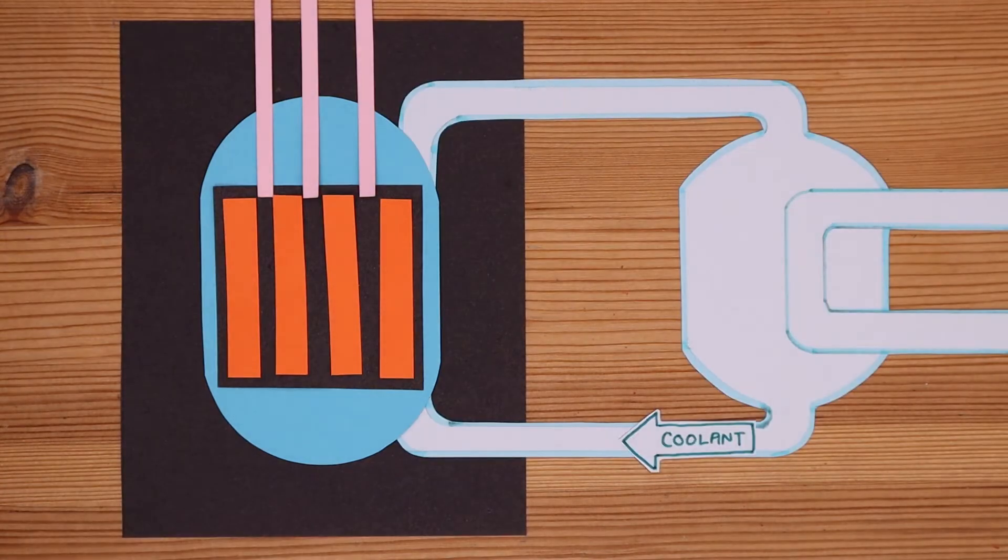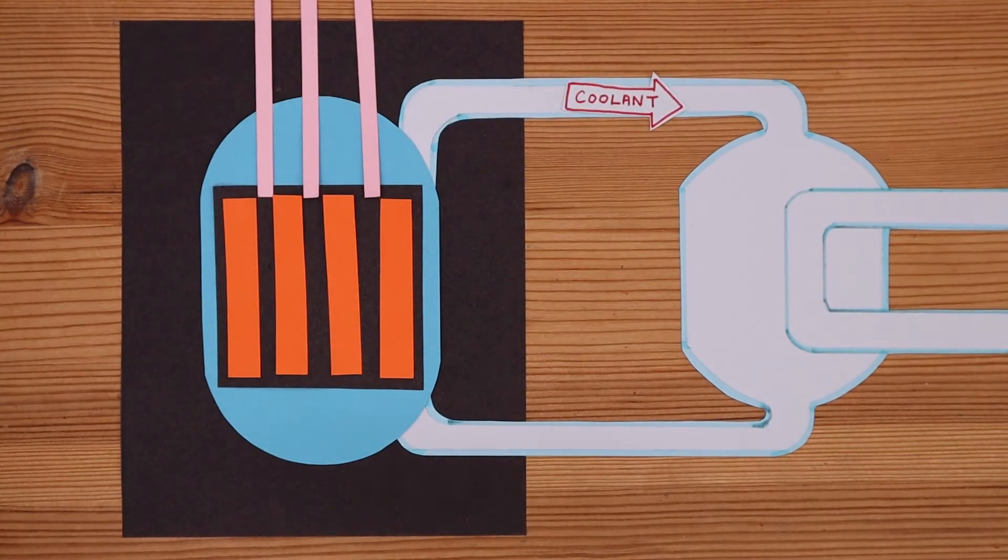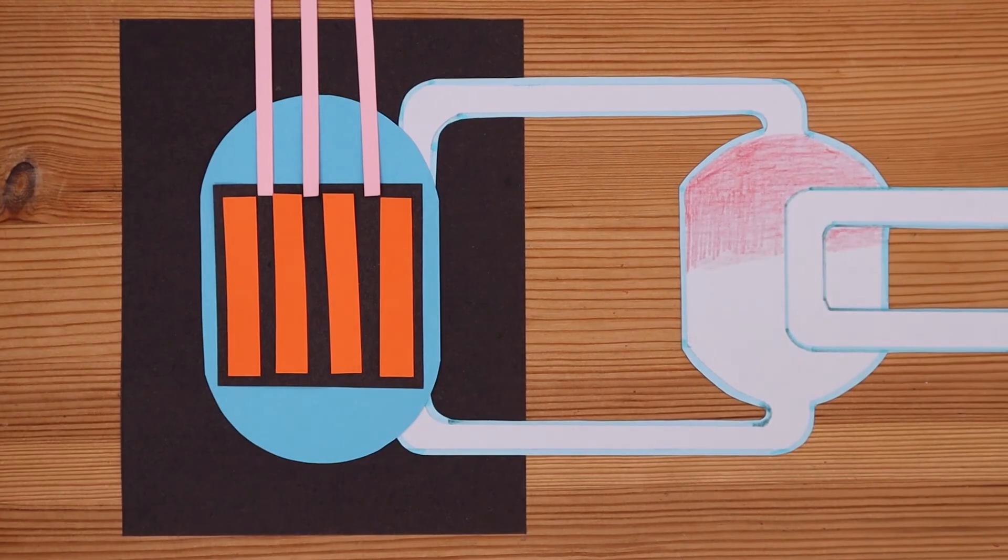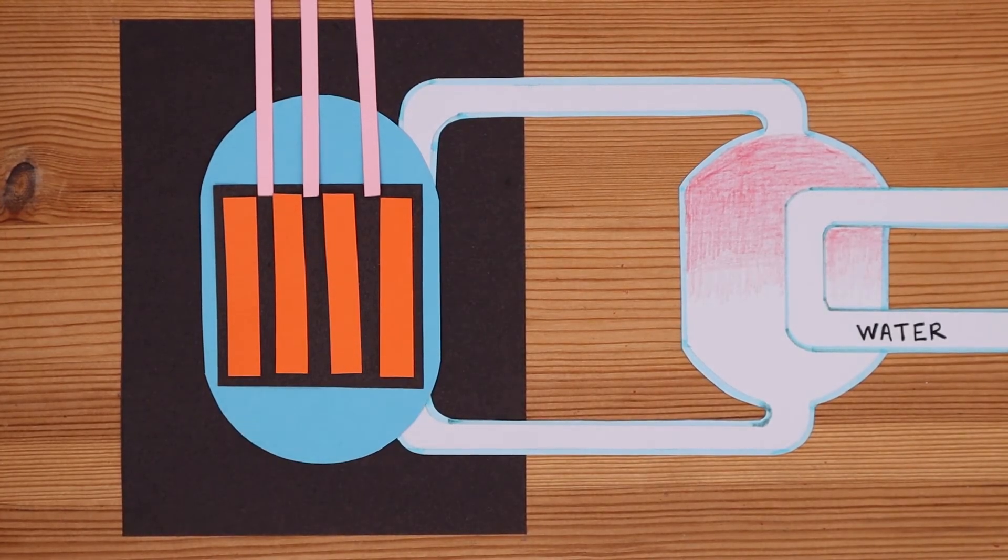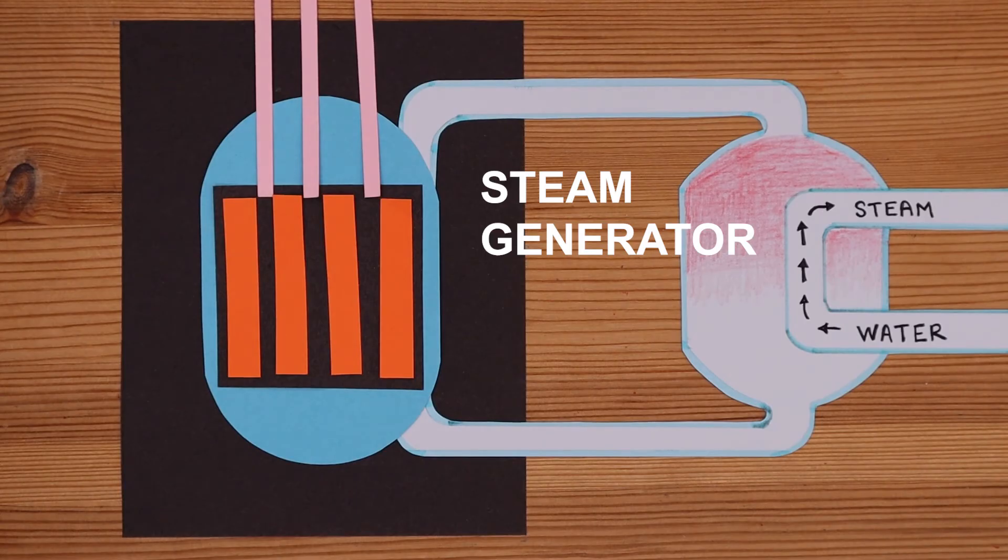That's a lot of thermal energy. You want to pump coolant, which could be water, into the reactor to absorb and transmit the energy out of the reactor. If we pump water into the steam generator, the steam created can then drive a turbine. The turbine generates electricity.